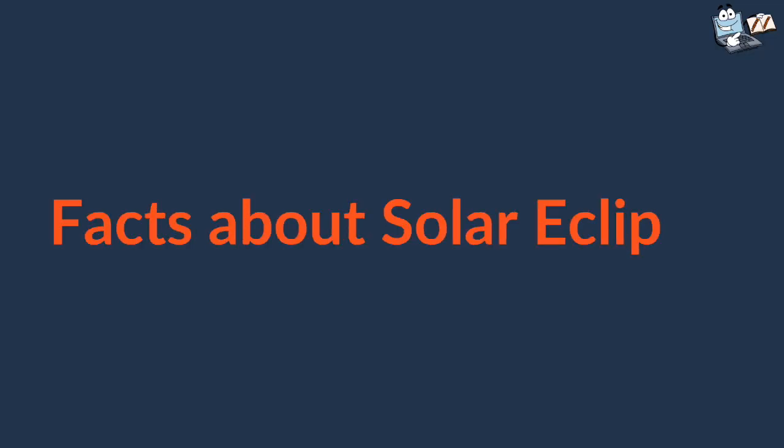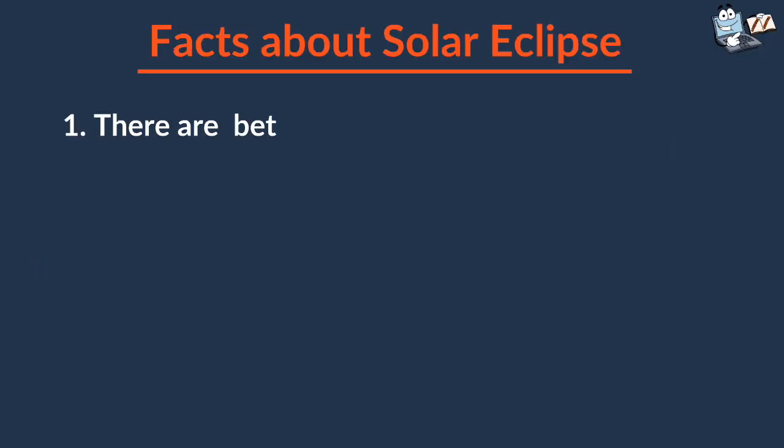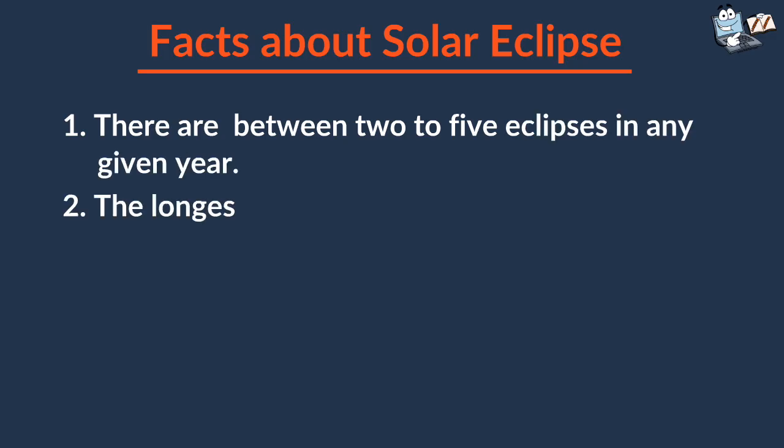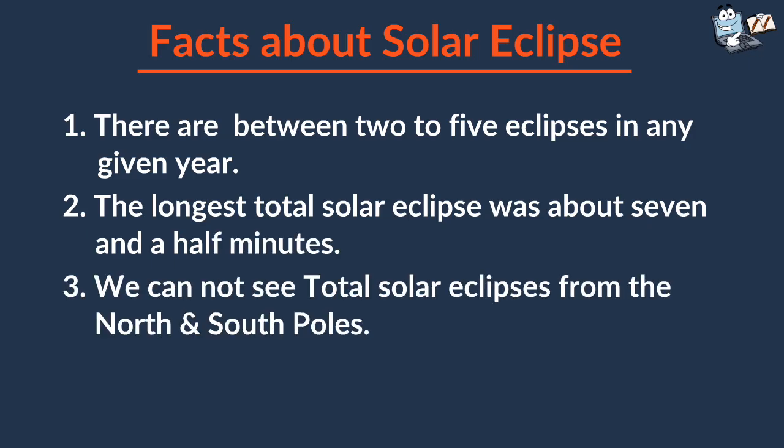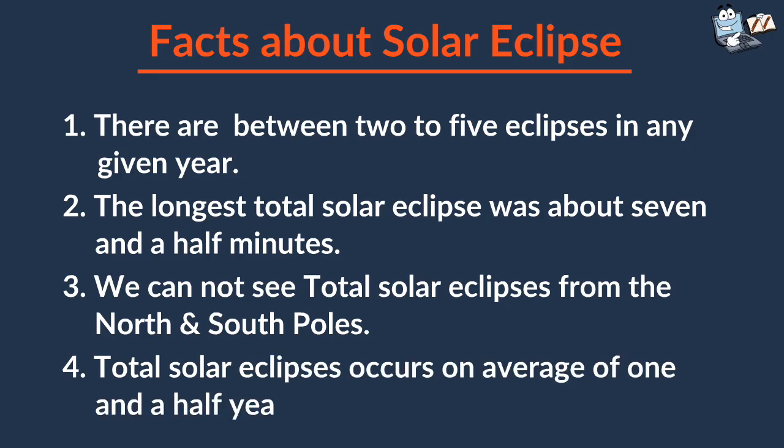Some cool facts about solar eclipse. There are between two to five eclipses in any given year. The longest total solar eclipse was about seven and a half minutes. We cannot see total solar eclipses from the North and South Poles. Total solar eclipses occur on average of one and a half years.